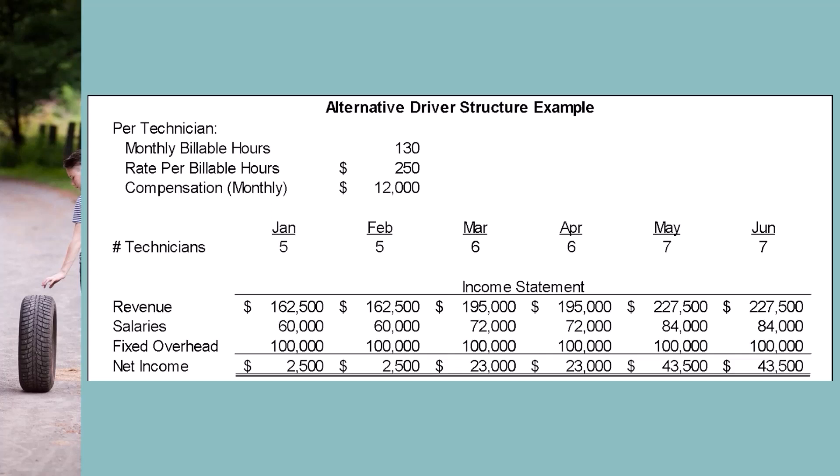This second example makes the number of technicians a very powerful driver — it drives both revenues and expenses. This logic might work better when the number of technicians is the main constraint to billable hours. If they hire more technicians, there will be enough market demand to utilize them fully. In this case, the number of technicians is a powerful driver and a KPI.